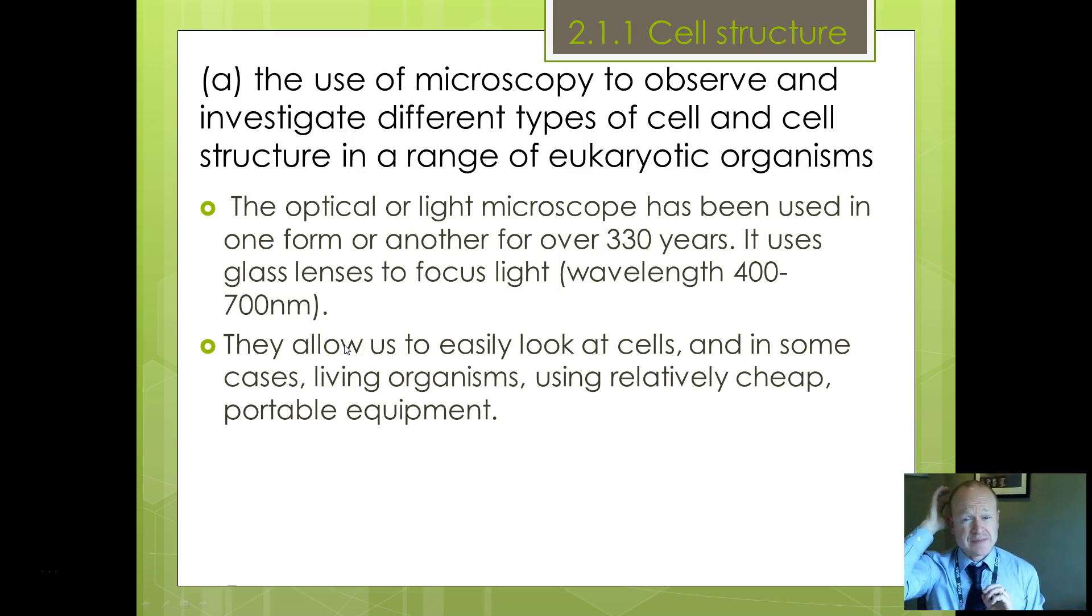So how do we use microscopes? Let's think about the types of microscopes that there are. There's the optical or light microscope using glass lenses. It uses glass lenses to focus light, and the light wavelength is 400 to 700 nanometers. In other words, the size of the wavelength of the beam that you are using to look at will help to look at the material. They allow us to look at cells and in some cases living things. They're relatively cheap and portable. You can pick one up for about £100, which might not be that cheap but they are certainly much cheaper than other types of microscope.